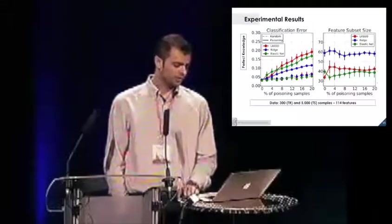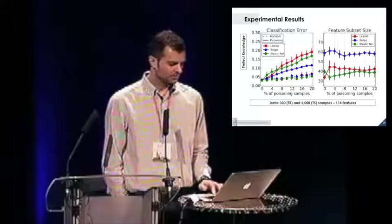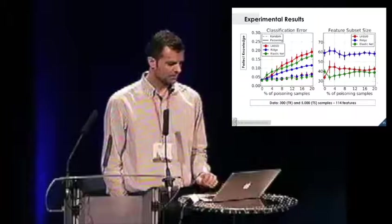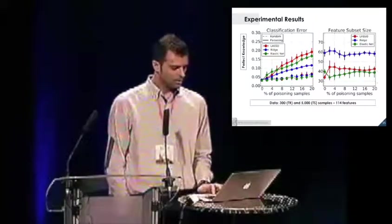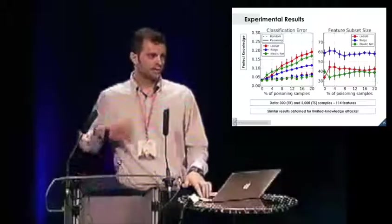So here are some results. For the perfect knowledge case, we report how the classification error varies with respect to an increasing percentage of poisoning samples for the three algorithms mentioned before. We have lasso in red, ridge in blue, and the elastic net is green. What you notice is that the more vulnerable one is the lasso. This is probably due to the sparsity property of this algorithm. You reach almost 20% error for 20% injected poisoning samples. We also report the feature subset size, the size of the selected feature set by each of these algorithms. The ridge typically selects more features because it has a dense solution. On average, it picks 60 features out of the 114 total. This is a quite interesting result, and we got similar results for the limited knowledge case. Even if the attacker doesn't know the training data exactly, you've got more or less the same thing.